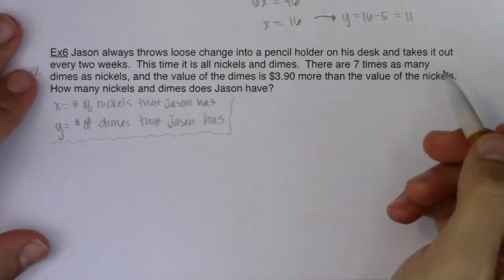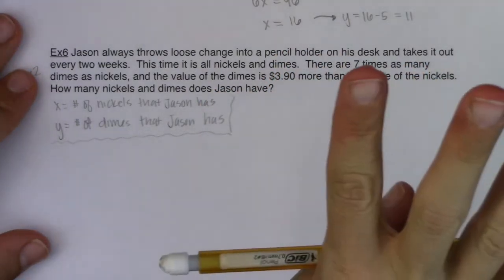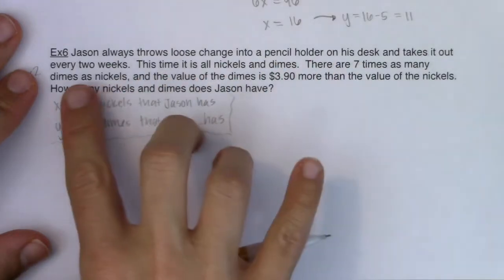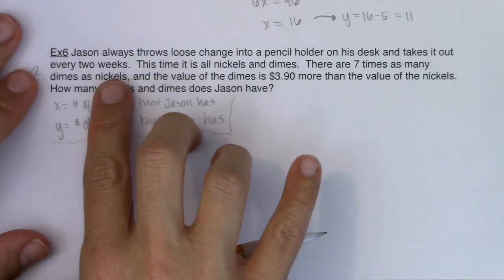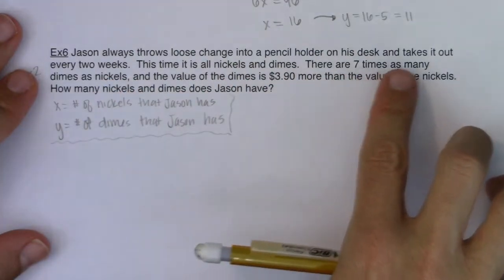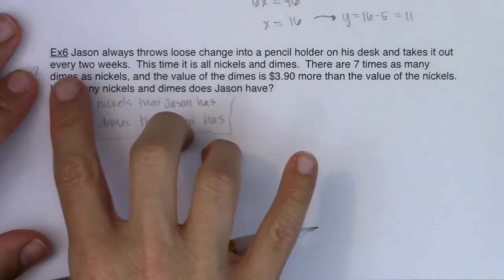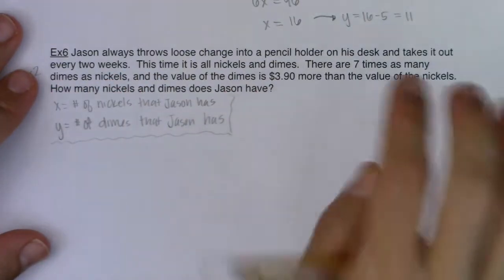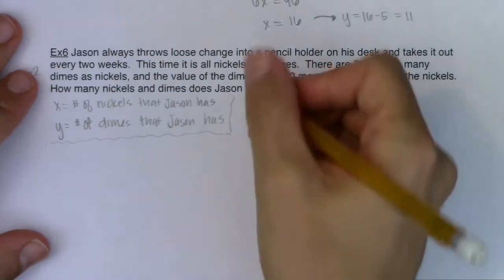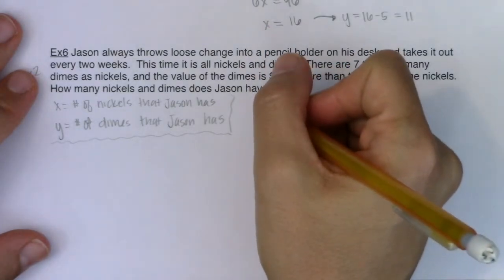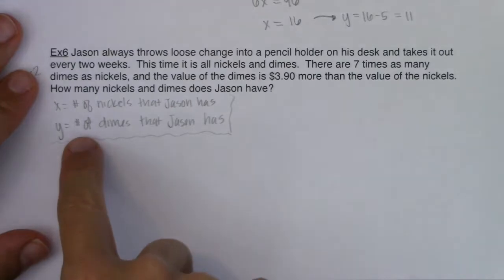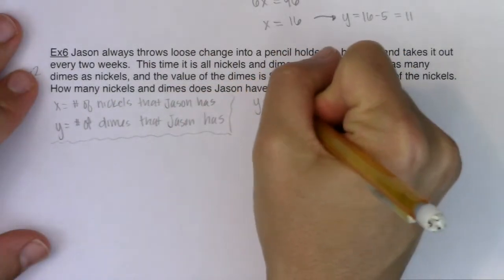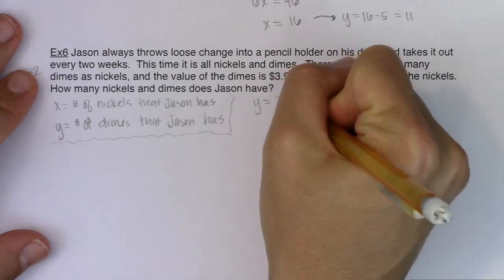Alright, let's see if we can find our two equations. The first thing I see is there are seven times as many dimes as nickels. So however many dimes he has, it's way more than the number of nickels. We have seven times as many dimes as nickels. If we think about dimes, there's more of these, and that is our y variable. So y is seven times as large as x.